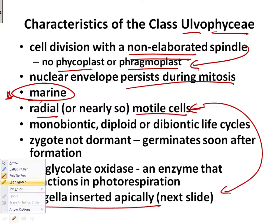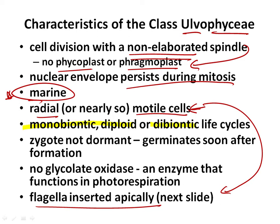Life cycles are different now. We have monobionic diploid or dibionic life cycles. None of the organisms here are monobionic haploid — monobionic haploid ones occur in the Chlorophyceae. The Ulvophyceae has monobionic diploid or dibionic life cycles. Associated with that is the fact that the zygote is not dormant — it germinates soon after it is formed and does not go directly through meiosis. Like other members of the Chlorophyta, there is no glycolate oxidase.